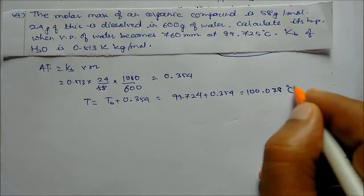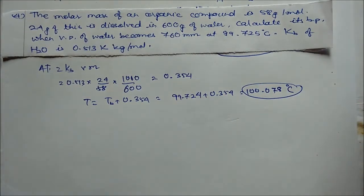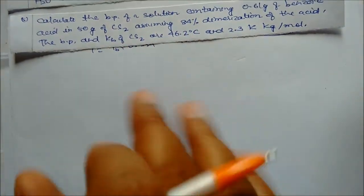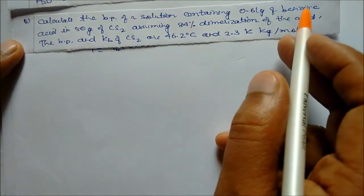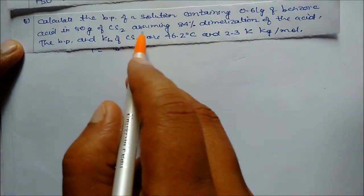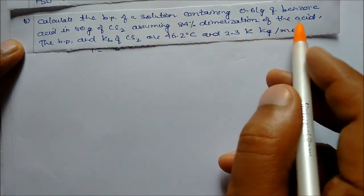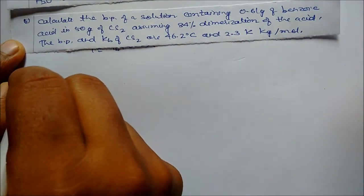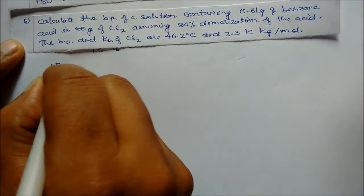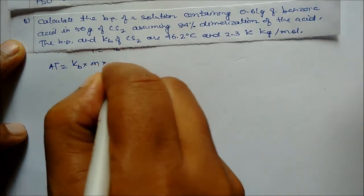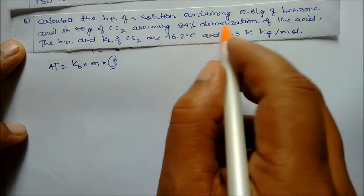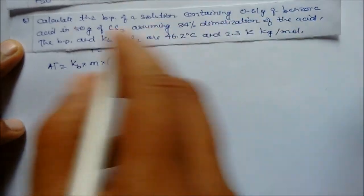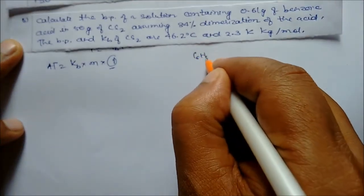Next problem: Calculate the boiling point of a solution containing 0.61 grams of benzoic acid in 15 grams of CS₂ (carbon disulfide), assuming 84% dimerization. We use the formula: delta T = Kb × m × i. The van't Hoff factor i is needed because benzoic acid dimerizes.